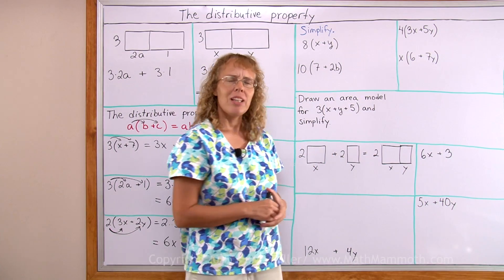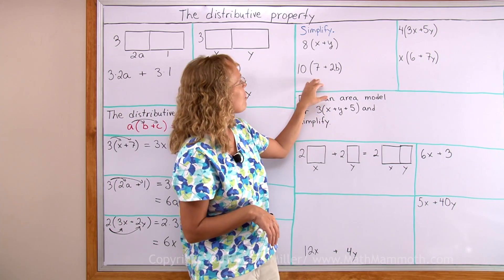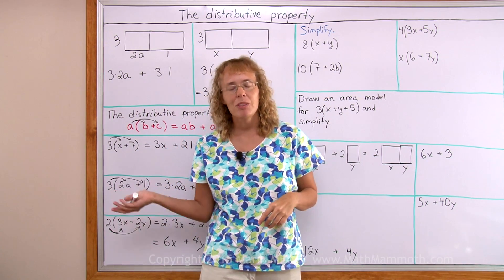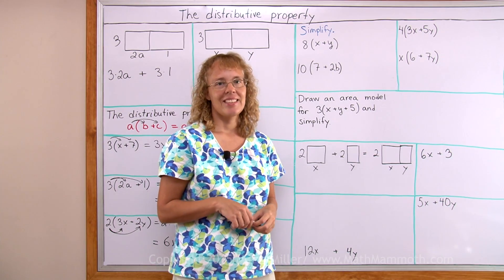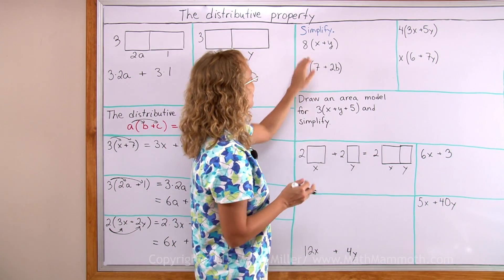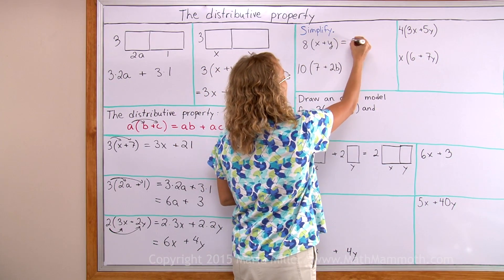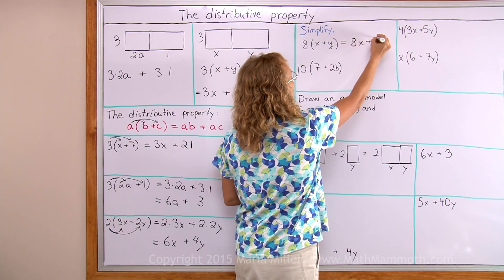Now let's practice that a little bit more. Pause the video now and try to simplify this on your own, or get rid of the parentheses using the distributive property. Here I will multiply 8 times x and 8 times y. So this is simply 8x plus 8y.